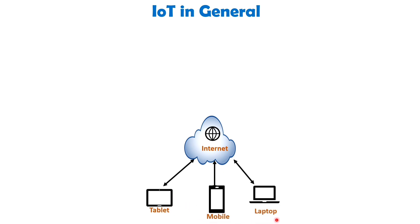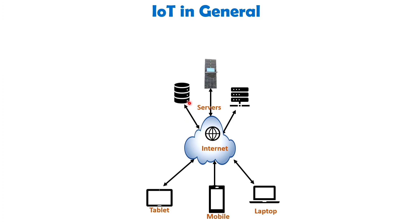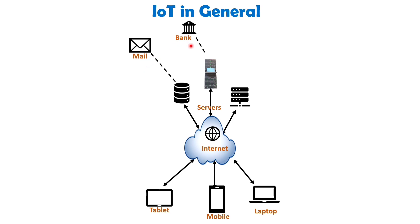At the core of the Internet, there are servers responsible for storing, manipulating, and processing user data. Each service typically has its dedicated servers. For instance, Google has its own servers for its services, and banks have their own servers for banking transactions. The Internet enables a wide range of activities such as sending and receiving emails, conducting banking transactions, playing music, online shopping, and many more.